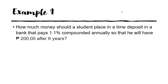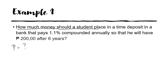Let's have this example. How much money should a student place in a time deposit in a bank that pays 1.1% compounded annually so that he will have 200,000 pesos after 6 years? We are asked here to find the present value or the principal.